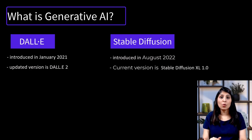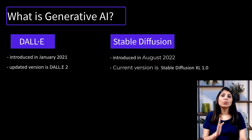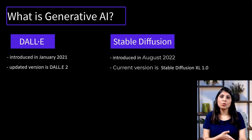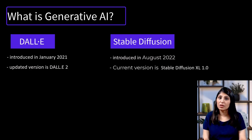If you want to generate images using the DALL-E model or MidJourney, you need cloud services for that. Let me know in the comments if you want me to make a video on how to use Stable Diffusion models on a PC to generate images.